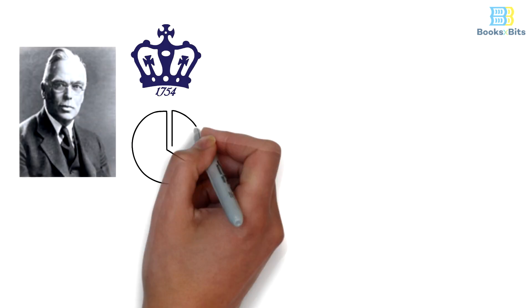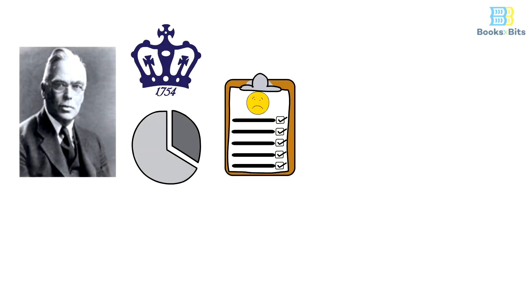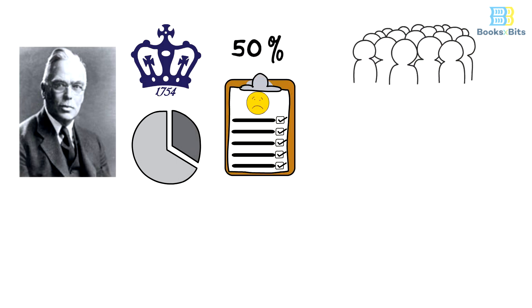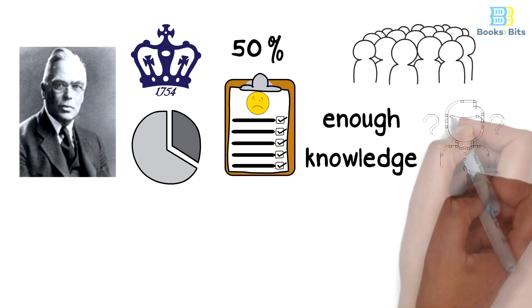When the Dean of Columbia College, Herbert Hooks, conducted a study to look for the causes of anxiety, he found that at least 50% of people worry because they don't have enough knowledge to make appropriate decisions.